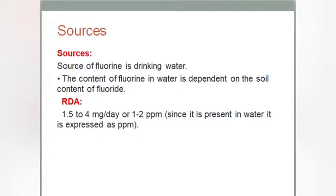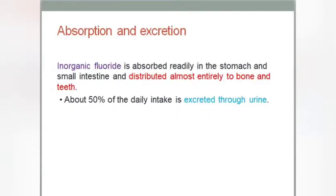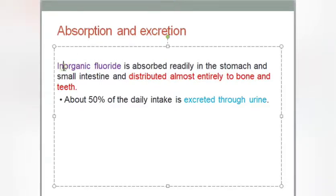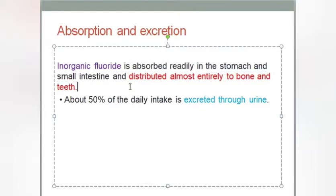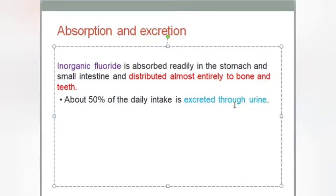Now we are going to see how fluorine is absorbed and excreted. Inorganic fluoride is absorbed readily in the stomach and small intestine and distributed almost entirely to the bone and teeth. About 50% of the daily intake is excreted through urine. The remaining extra contents of fluoride will be excreted through urine.